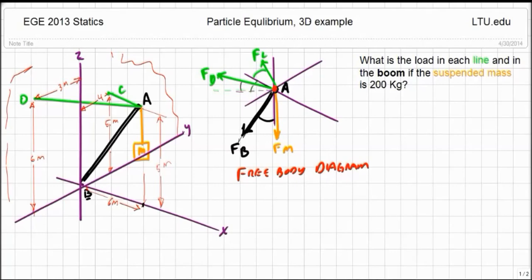And I have the various forces, the force in the direction towards C, the force in the direction towards D, the force in the direction towards B, and the force due to the mass and gravity pointing straight down.